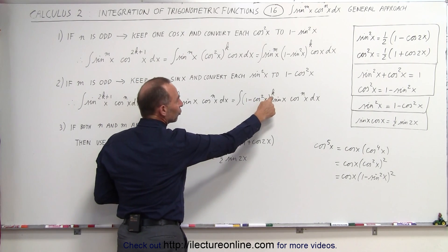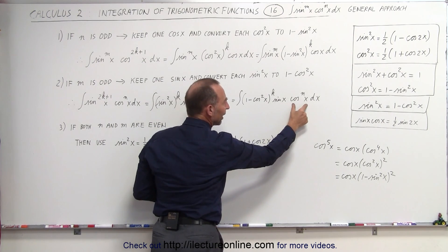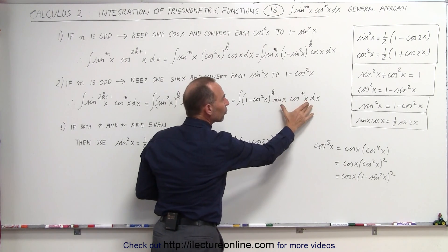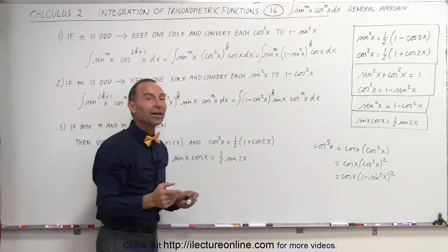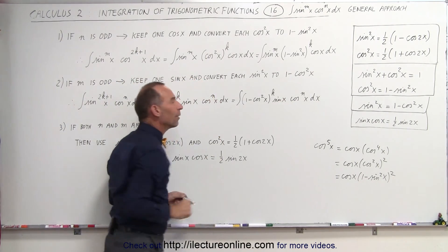You multiply this out, if this is 2, 4, 6, doesn't matter, you multiply it all out times the cosⁿx. Now you have nothing but cosines, multiply times the single sine, that becomes a differential of all the cosine terms, and you can integrate that.